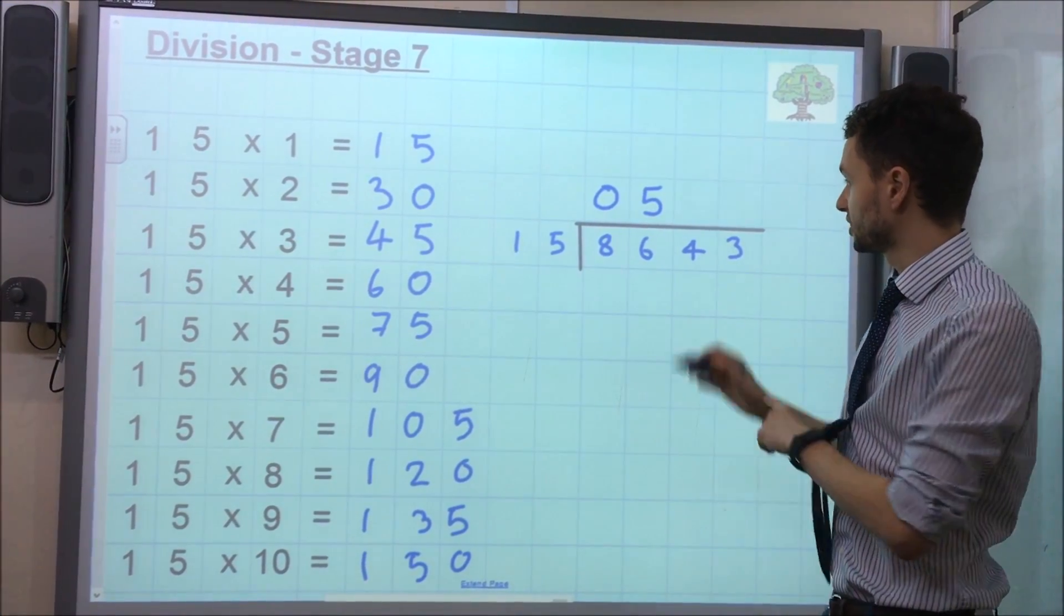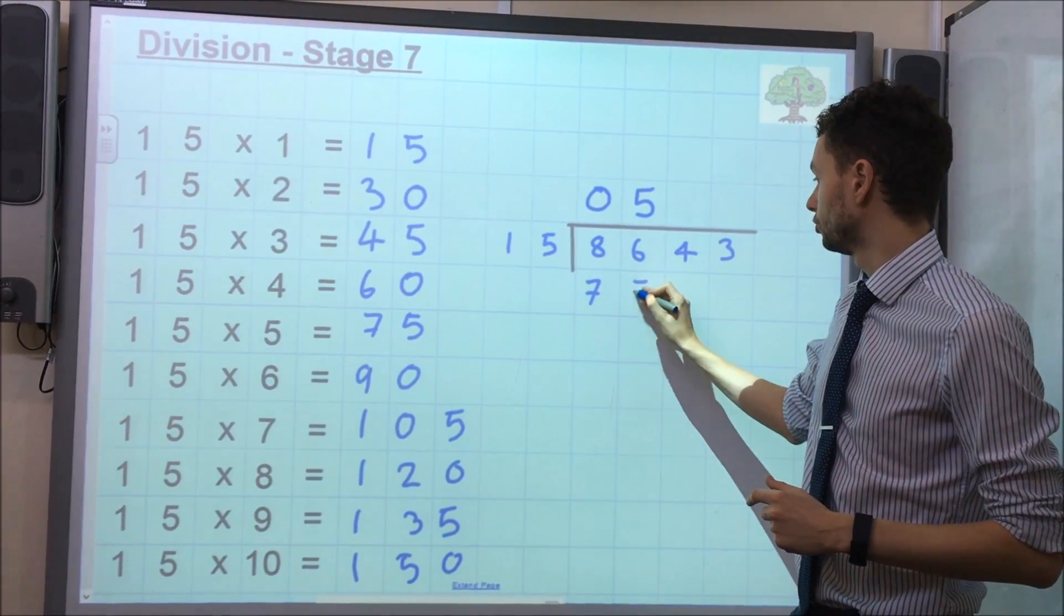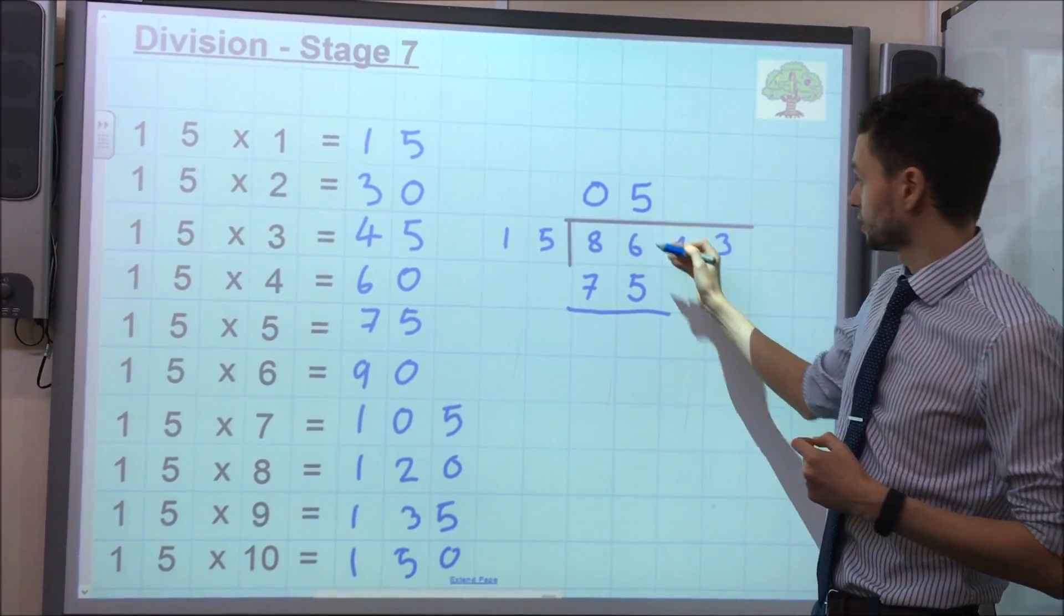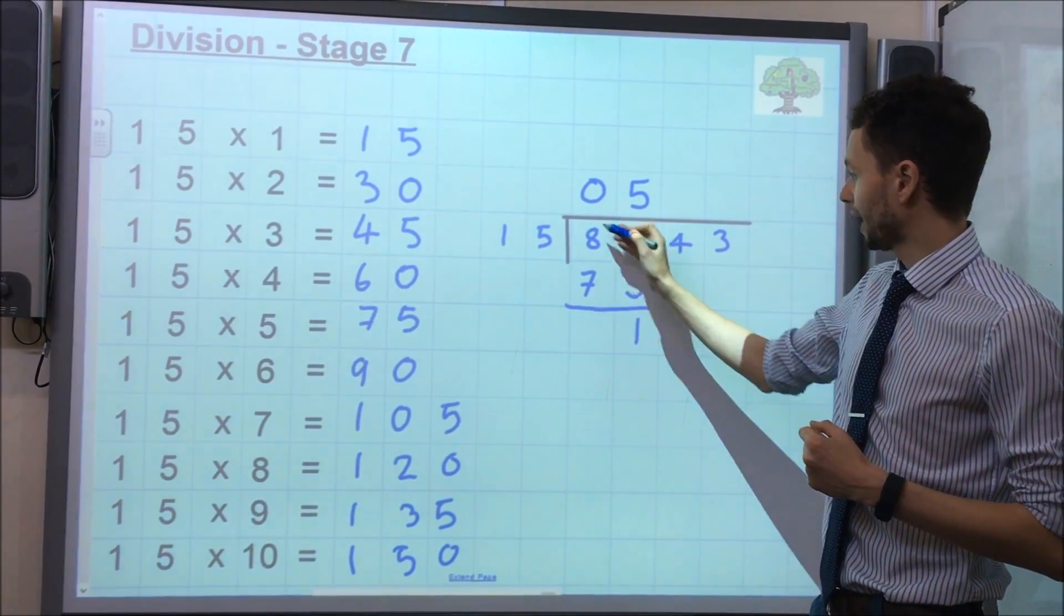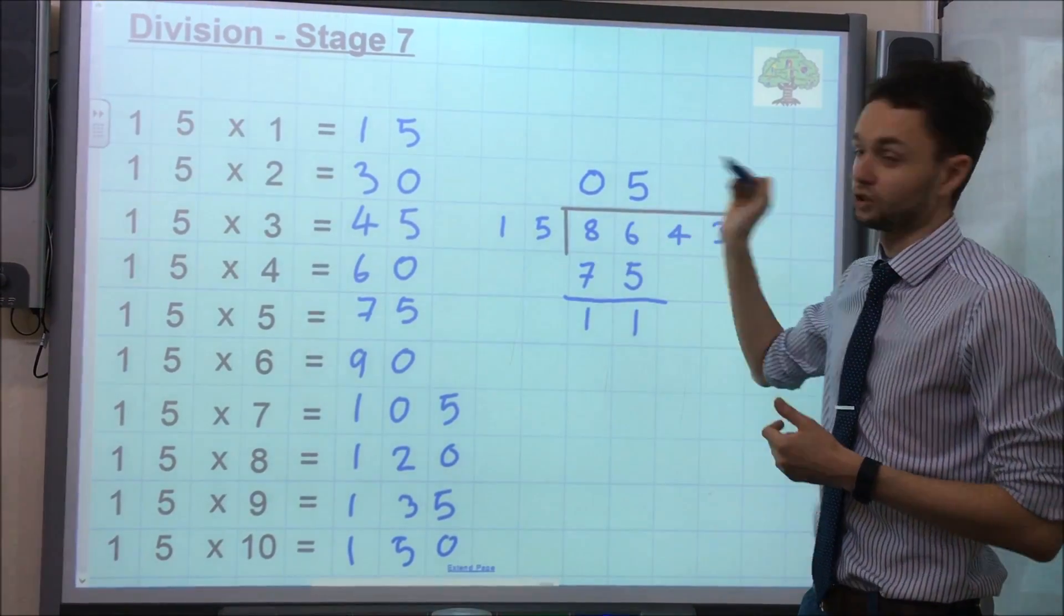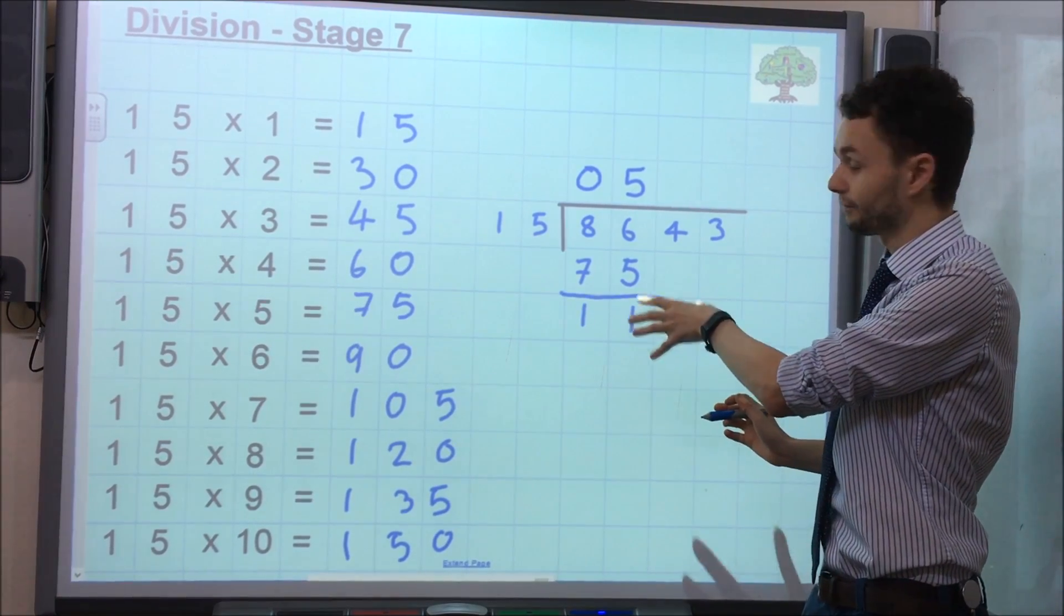Then the next stage is to take the answer to 15 times by 5, which is 75, and that goes underneath. Now we need to subtract these two numbers. So 6 take away 5 is 1, 8 take away 7 is 1. Remember, of course, that's the 8,000 and the 7,000 there. So, we've got that 11.